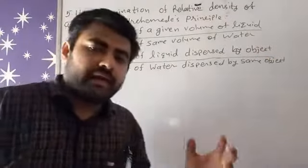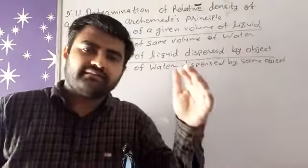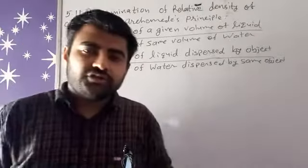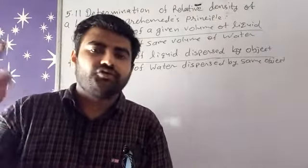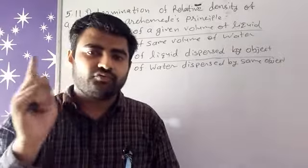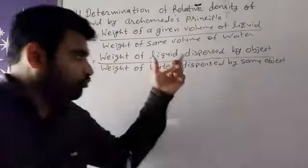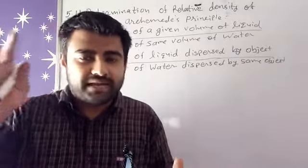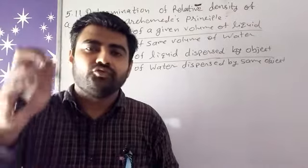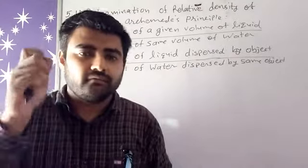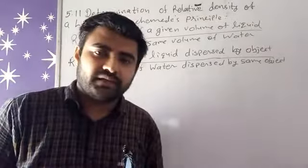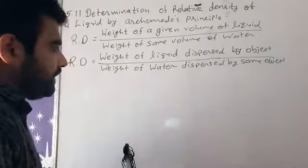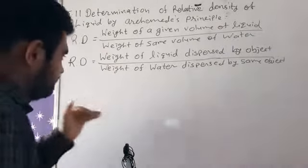Suppose we take an object and immerse it first in a liquid — the liquid can be anything: glycerine, oil, kerosene, petrol. When we immerse that object in the liquid, the liquid that gets displaced around it — its weight goes in the numerator. Then we dry and clean the same object, put it in water, and the weight of water displaced goes in the denominator.